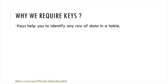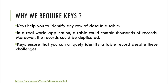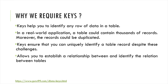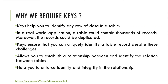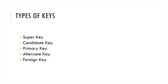A primary key cannot store a duplicate value or null value — every value is unique. Keys allow you to establish and identify the relationship between tables and help enforce identity and integrity. The types of keys are: super key, candidate key, primary key, alternate key, and foreign key.